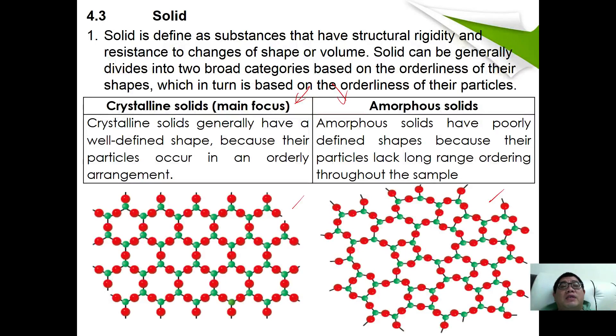Examples of crystalline solids are table salts, and examples of amorphous solids are glasses.